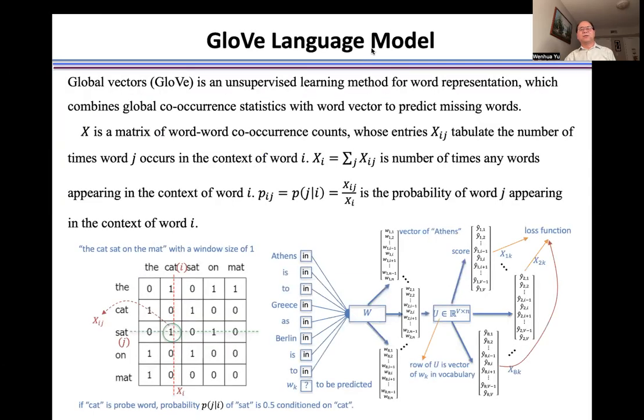Global Vectors is an unsupervised learning method for word representation, which combines global co-occurrence statistics with word vectors to predict missing words.